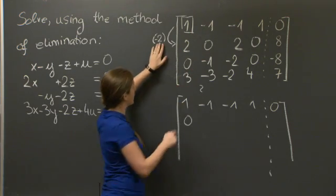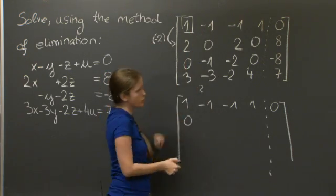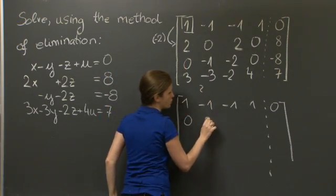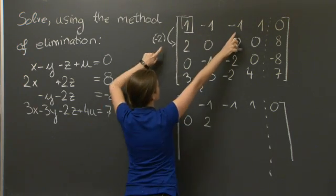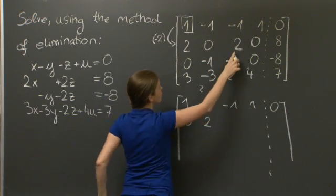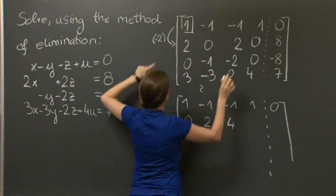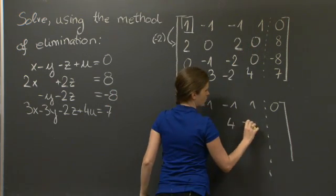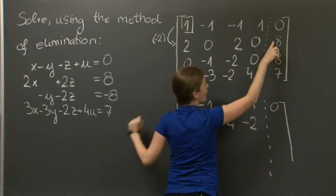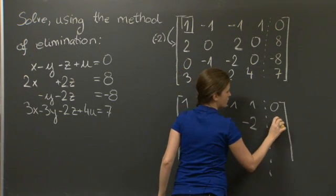Next, on this position here, we get -2 times -1, which is 2, plus 0, which is 2. -1 times -2, which is 2, plus 2, which is 4. -2 plus 0, which is -2. And 8 minus 2 times 0, which is 8.